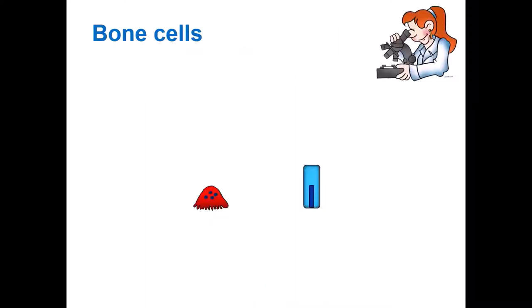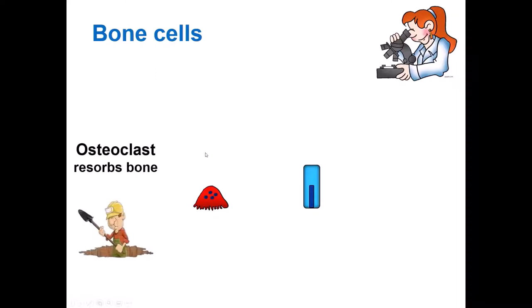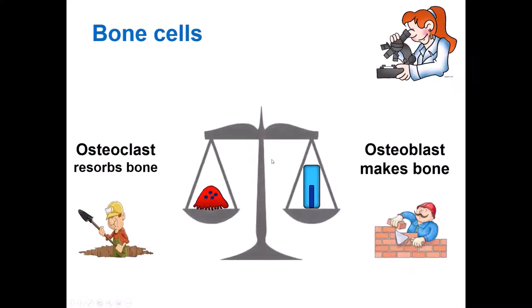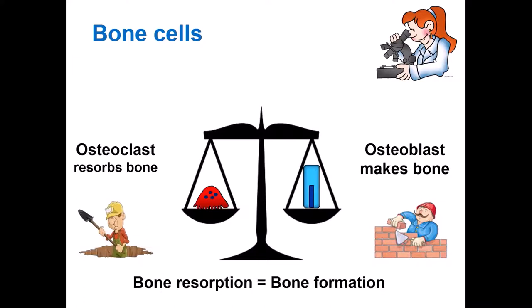So how is this possible? This all boils down to the function of two types of bone cells. The osteoclasts, seen here on the left depicted in red, resorb bone. And osteoblasts make or form bone. The action of those two types of cells is balanced in healthy bone, so the amount of resorbed bone equals the amount of bone formed.